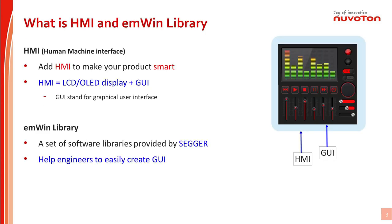In this page, we will explain what is HMI and what is the emWin library. First of all, HMI stands for human-machine interface. Simply, you could consider it as an LCD or OLED display with a graphical user interface (GUI) to help people interact with the HMI through touch control.